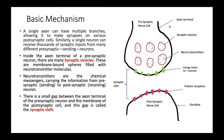The axon terminal is the tail end of the pre-synaptic neuron. The post-synaptic neuron is the receiving cell. Synaptic vesicles are sac-like structures present in pre-synaptic neurons — membrane-bound spheres filled with neurotransmitter molecules. Neurotransmitters are our chemical messengers, carrying information from the pre-synaptic (sending) neuron to the post-synaptic (receiving) neuron.